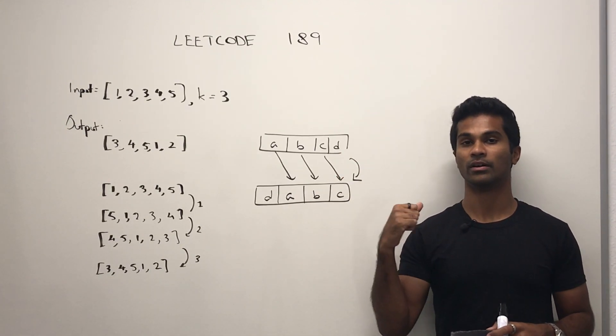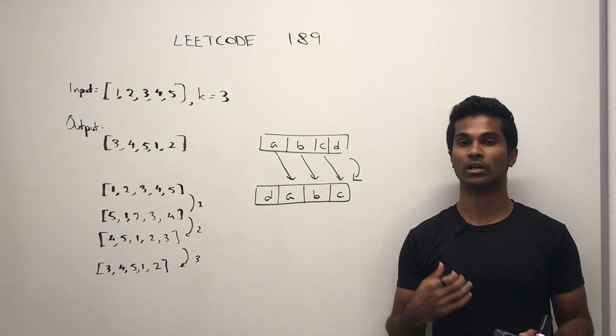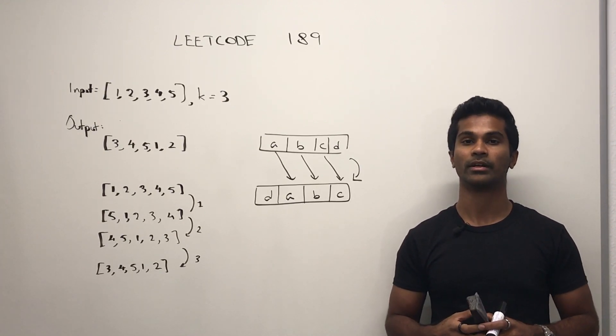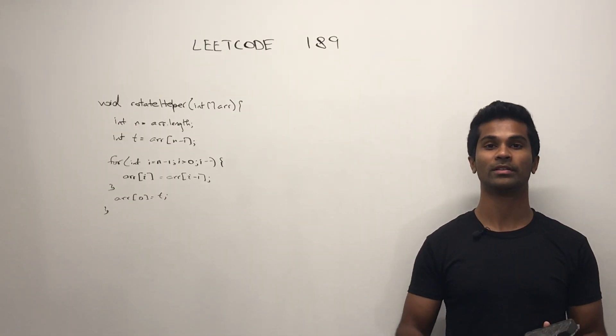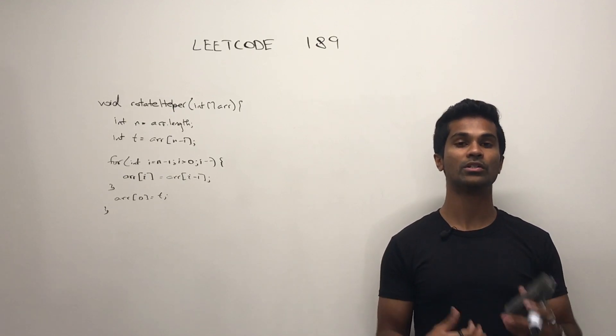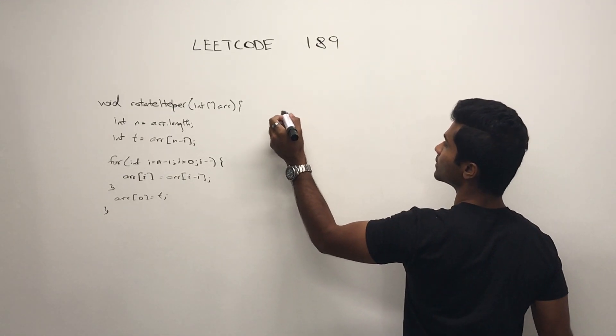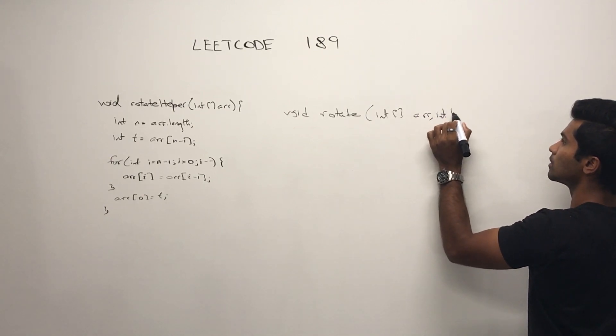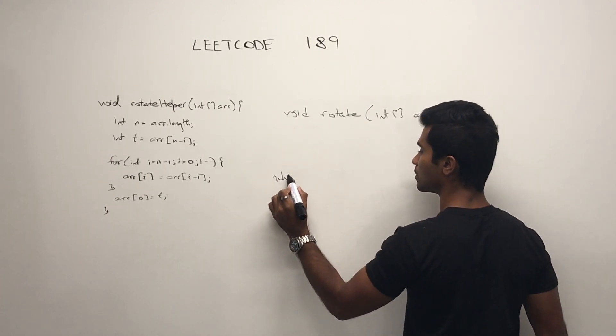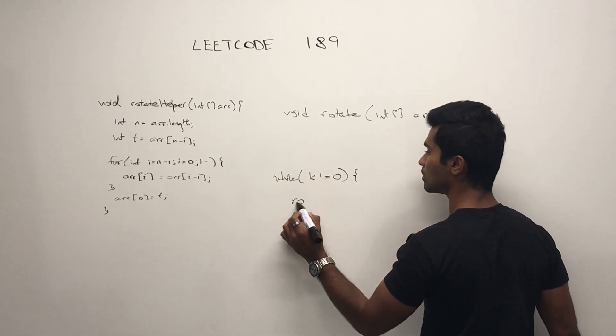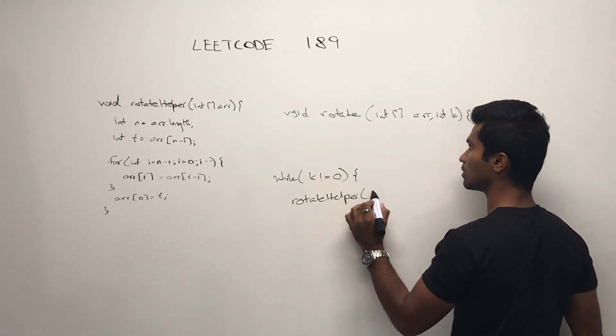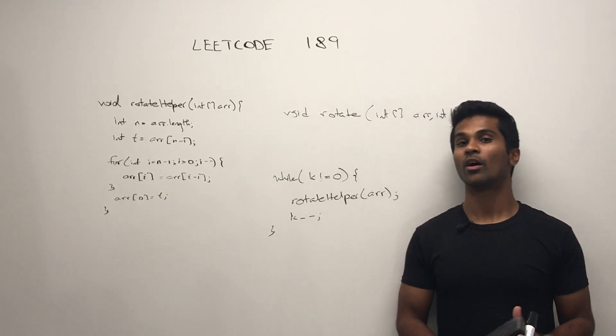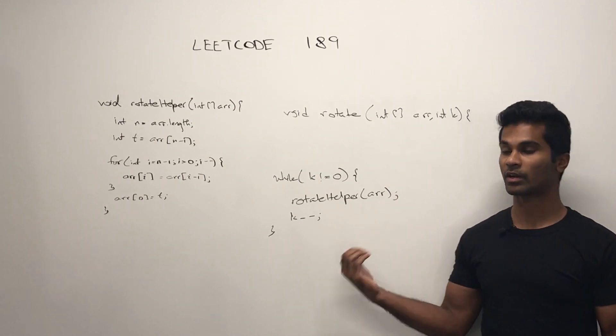I'm going to go over the solution that I had before and then I'll also share a time complexity optimized solution which comes from the LeetCode solution tab. So I wrote the helper method to help us rotate the array. Now what we're going to do is use that in our original function. All we have to do is call this helper method k number of times and decrement k accordingly.